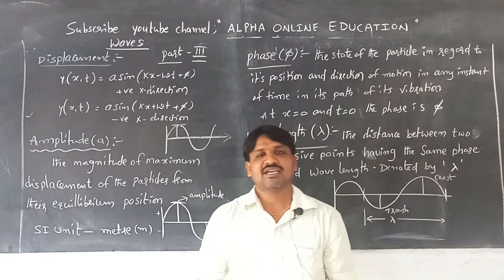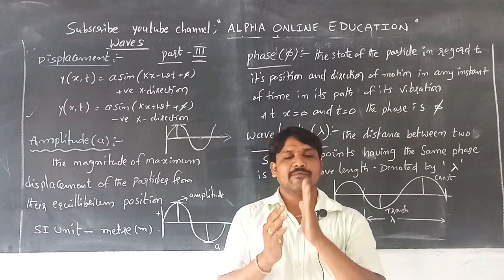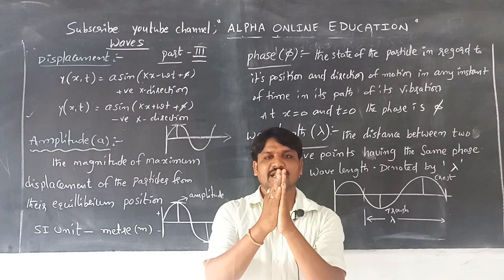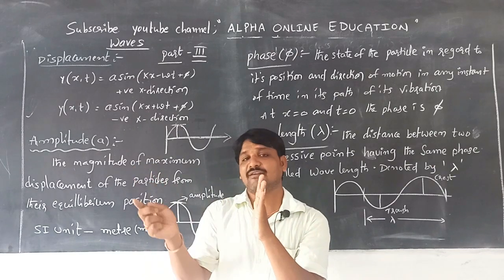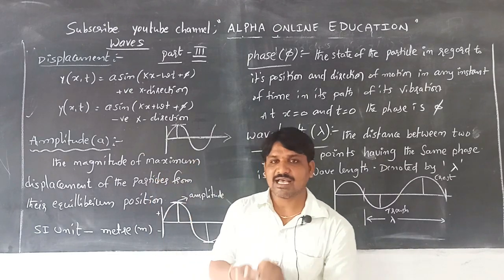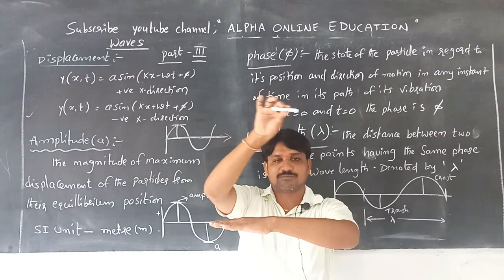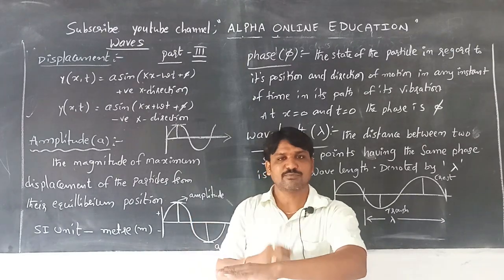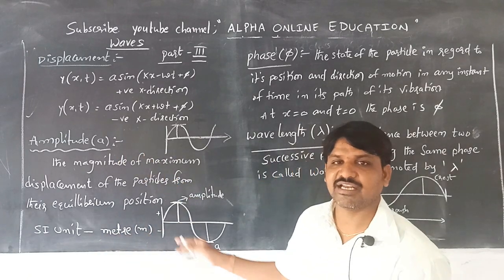Amplitude can be measured in both longitudinal and transverse waves. In longitudinal waves, compressions and rarefactions are formed. In rarefaction, the displacement of the vibrating particles occurs, and the distance from the mean position to the maximum displacement is called amplitude. In transverse waves, the maximum displacement from the mean position is also called amplitude. It is denoted with 'a' and measured in meters.